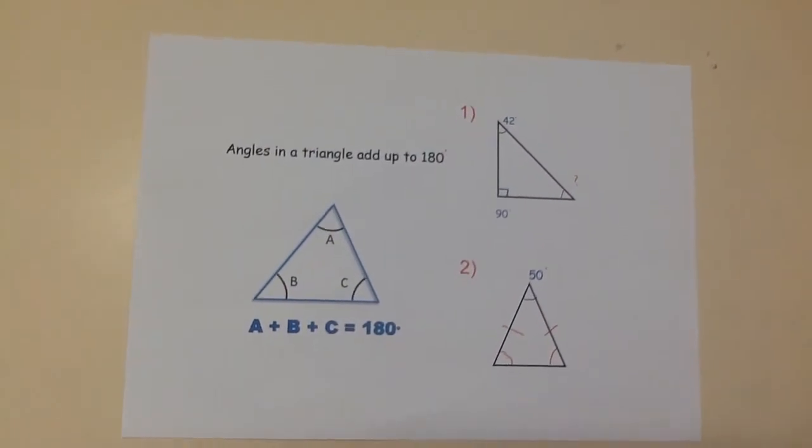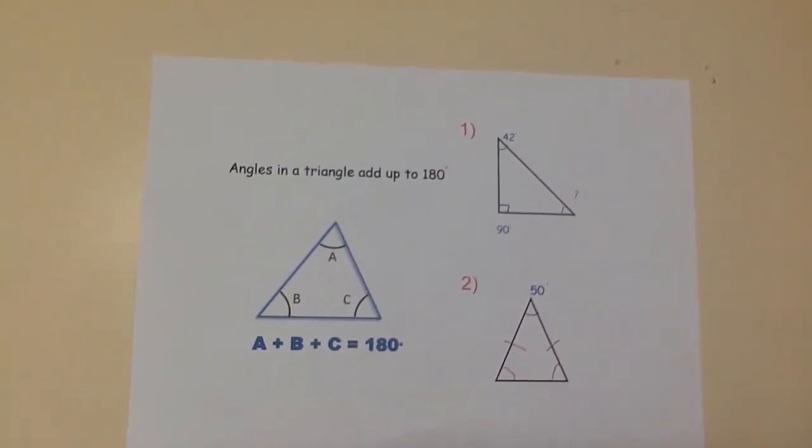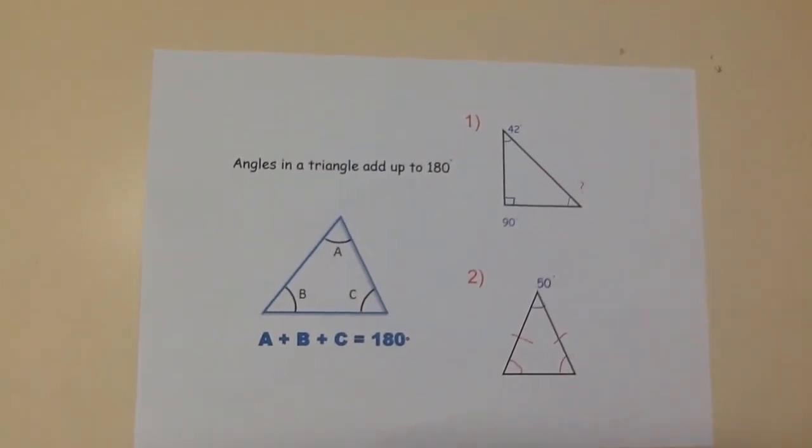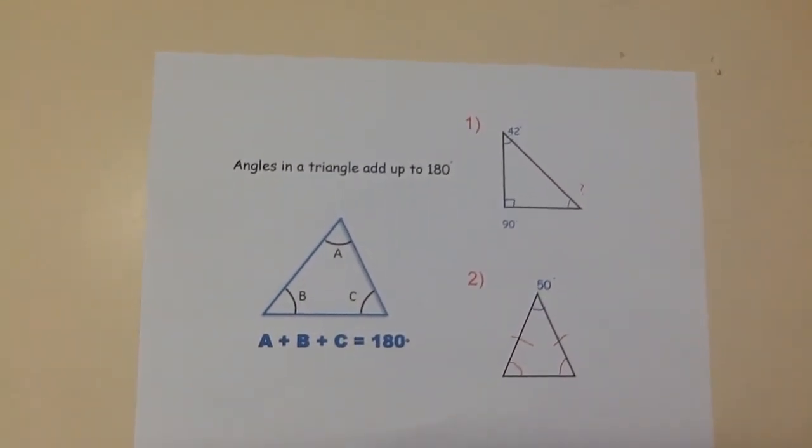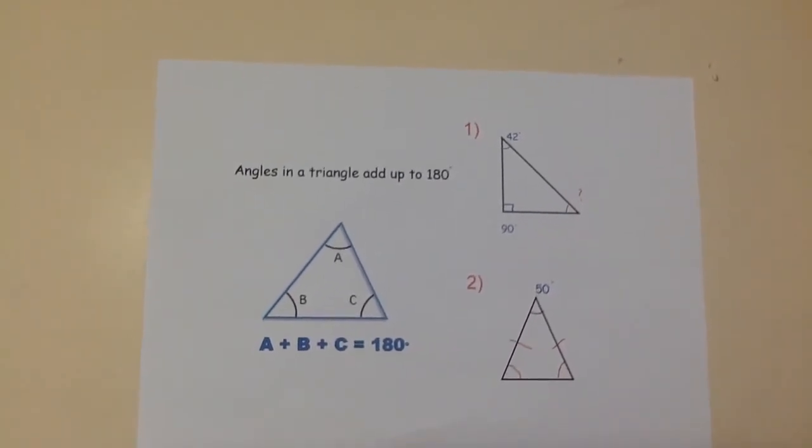Similarly, angles in a triangle are also 180 degrees. This means all three angles in a triangle must add together to make 180 degrees. So here, in question 1, we add together 42 and 90, which gives us 132,